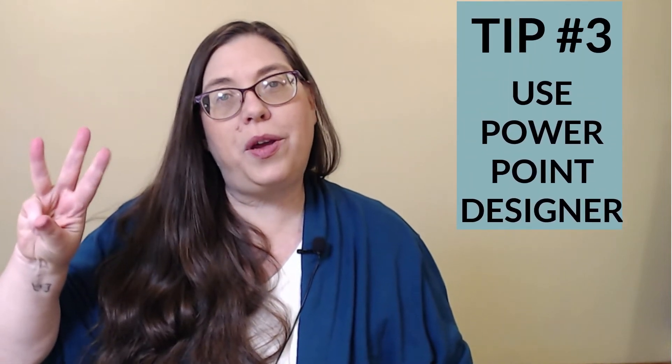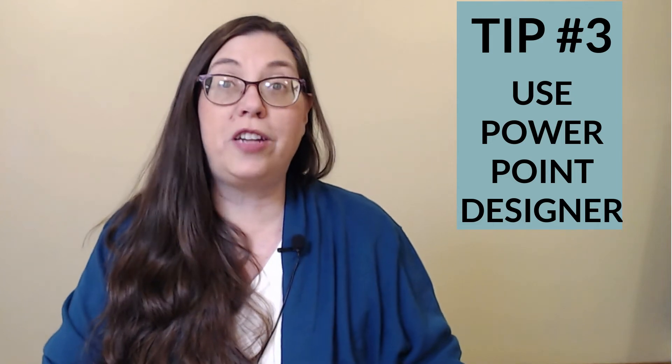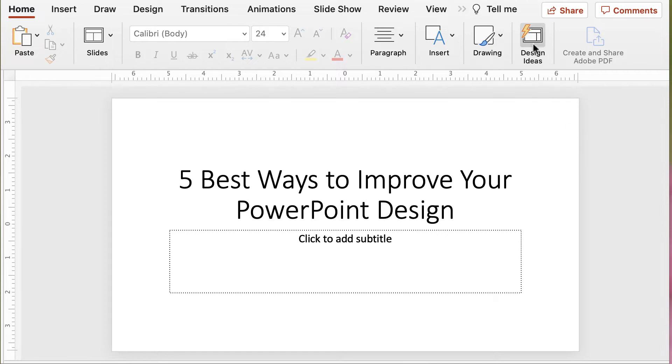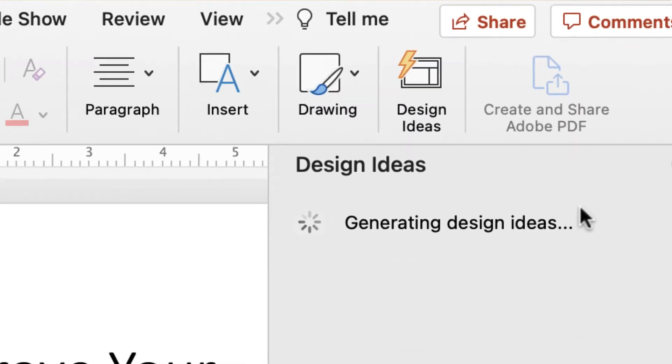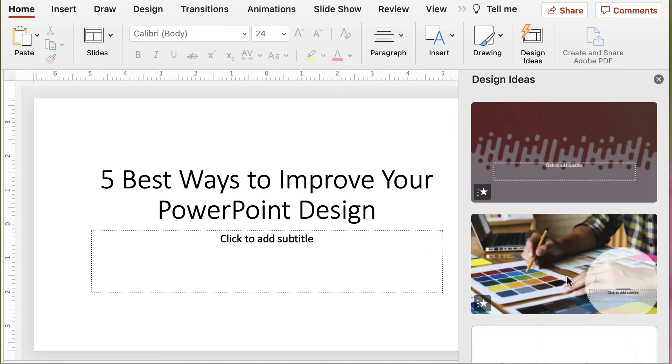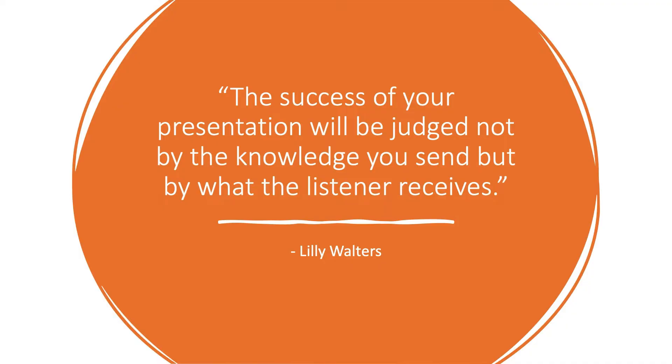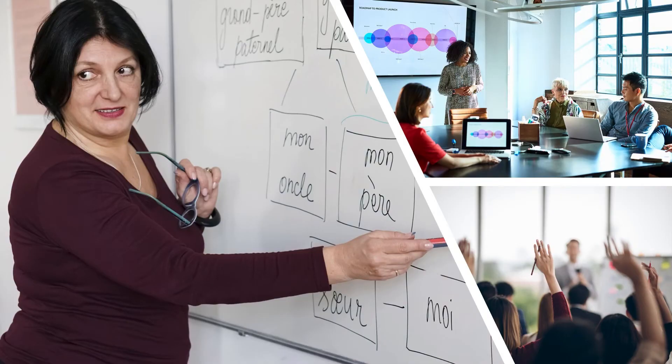Tip number three: use PowerPoint Designer. This feature uses artificial intelligence to recommend potential designs for a slide. Introduced in PowerPoint 2016, this feature continues to improve. To use the Designer, just click the Design Ideas button on the Home tab. Several options will be displayed — select the one that you want. You can convert a list, a quote, or a group of images using this feature. I use this option regularly, particularly if I'm in a hurry or struggling to figure out how to design a slide.